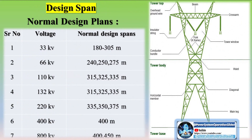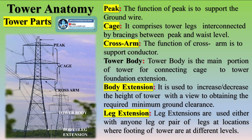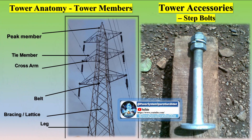Tower anatomy: the peak supports the ground wire. The cage comprises tower legs interconnected by bracings between peak and waist level. The cross arm supports the conductor. The tower body is the main portion connecting the cage to the tower foundation extension. Body extension is used to increase or decrease the height of the tower to obtain the required minimum ground clearance. Leg extensions are used with one or more legs at locations where footings are at different levels. Gantry structures, used in power transmission substations and similar in design and materials to transmission towers, are gate-shaped metal structures used for the electrical connection of various equipment, especially the line-to-post connection, transferring the cable from the line to the substation structures and equipment.